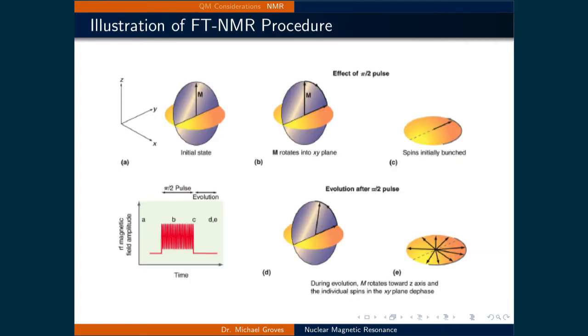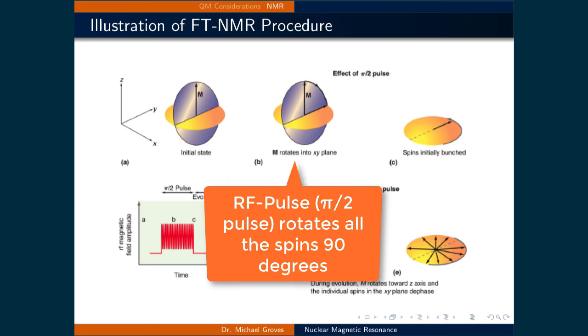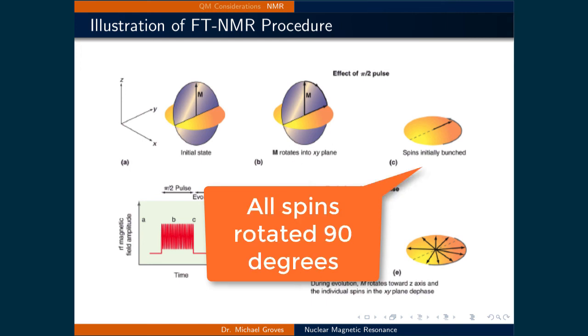Here is that procedure illustrated in pictures. In A, the initial state, the sample has all the magnetic moments, denoted as M, pointing along the direction of the magnetic field. In image B, a radiofrequency pulse, in this case called a pi 1.5 pulse, rotates all the spins 90 degrees. In image C, the result of that rotation can be seen.